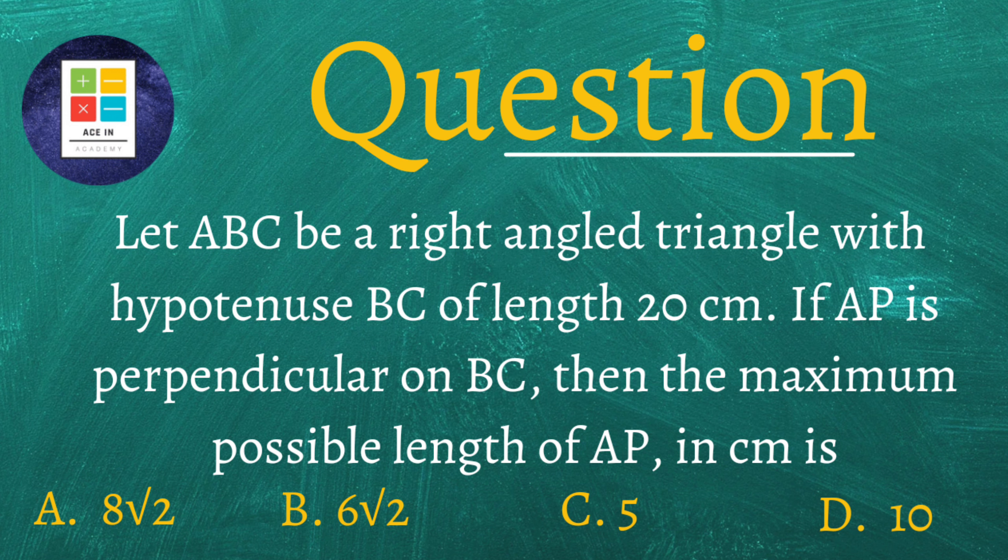The question is as follows: Let ABC be a right-angled triangle with hypotenuse BC of length 20 centimeters. If AP is perpendicular on BC, then the maximum possible length of AP in centimeters is: